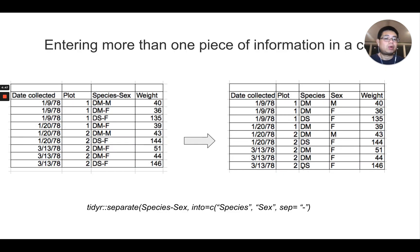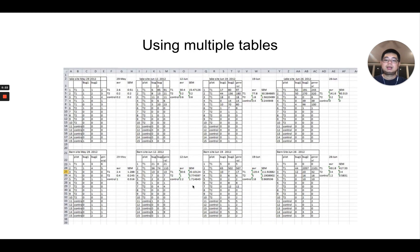So entering more than one piece of information in a cell - this is a very common problem as well. For example, here in this column, you have species hyphen sex. So those are two different types of information here. So what we need to do is you need to separate this into two columns, species and sex, whether it's male or female. So in tidyr, you can use the separate function and this column name here and separate into the new column name and the separator will be the hyphen.